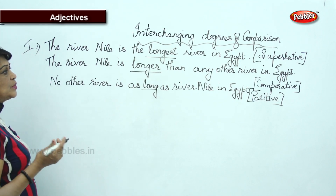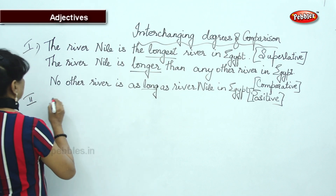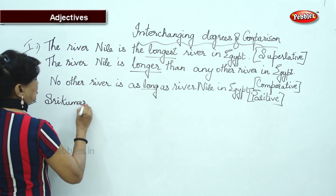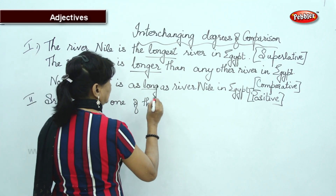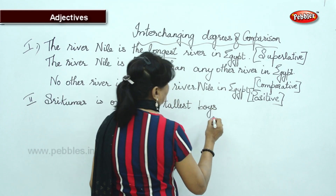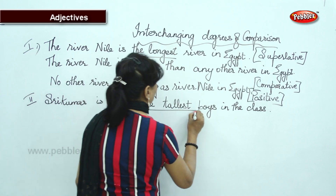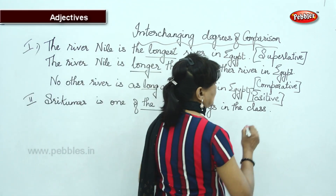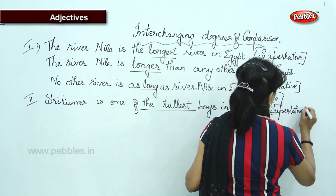If I say 'River Nile is one of the longest rivers in the world,' then how will you change it? This is the second pattern. For example: 'Shrikumar is one of the tallest boys in the class.' This is superlative — let's see how to transform it.